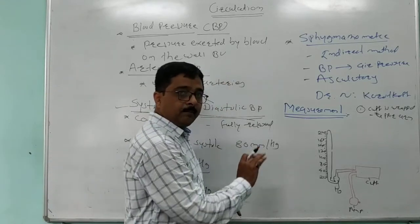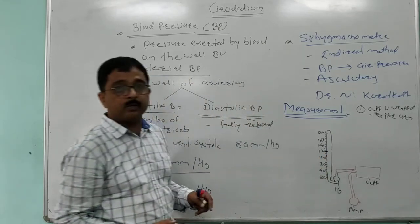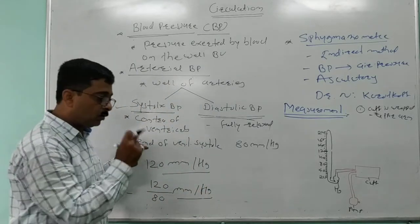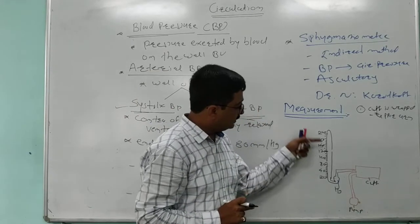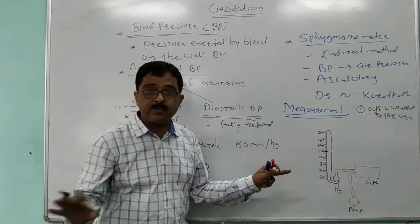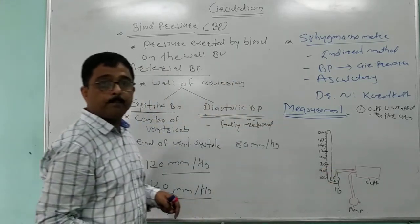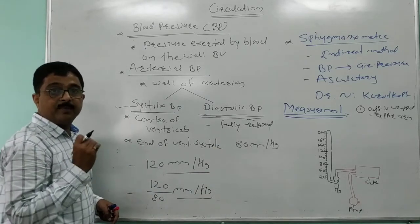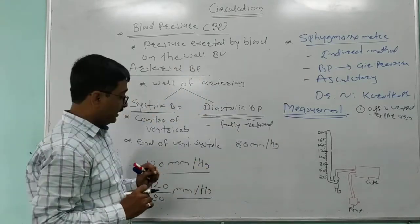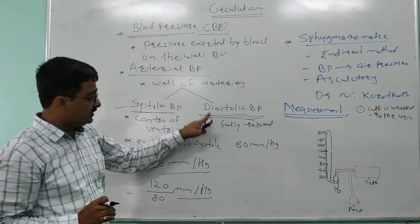In a normal adult human being, the mercury level decreases to 120 mm of mercury when the first sound of blood flow is heard — giving us the systolic blood pressure. We continue releasing the air pressure and the mercury level continues to decrease. At another particular point, the sound disappears — that is the diastolic blood pressure — which in normal human beings is 80 mm of mercury.